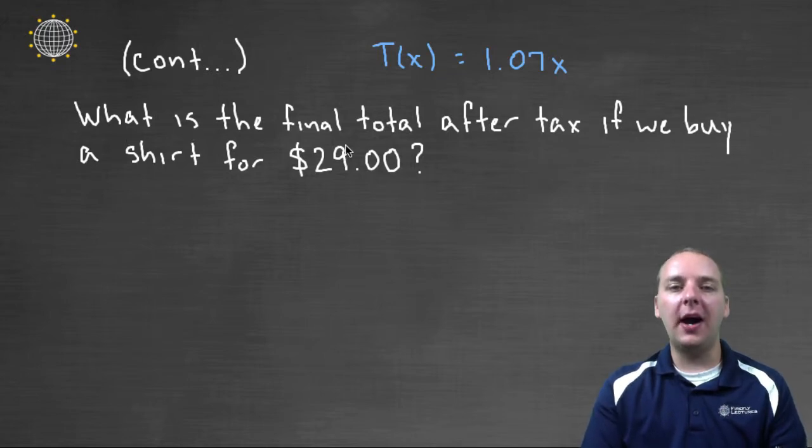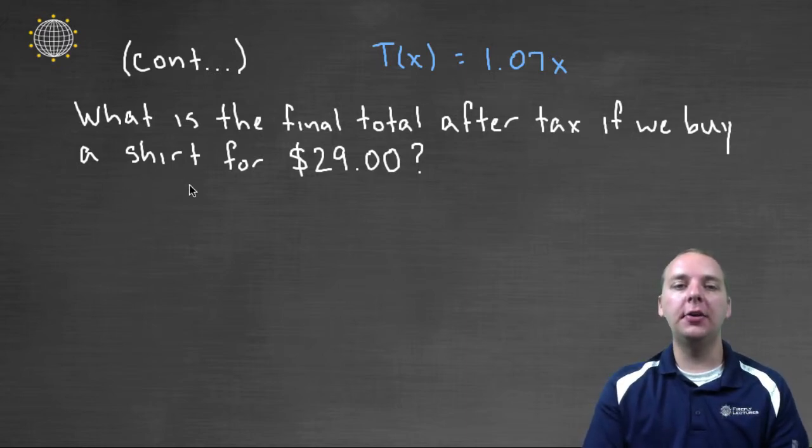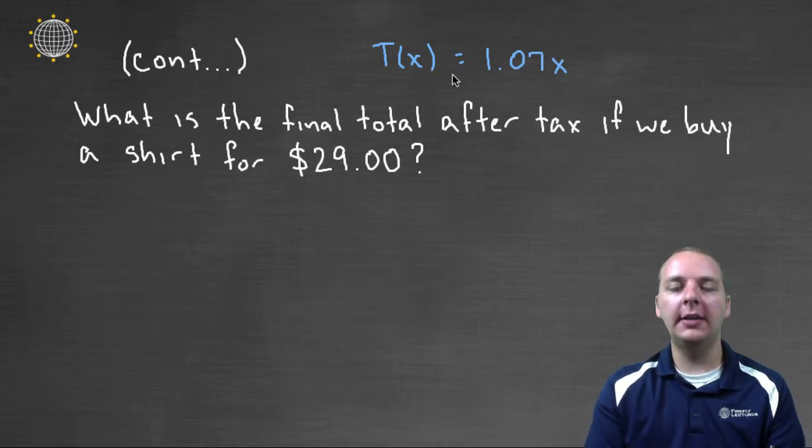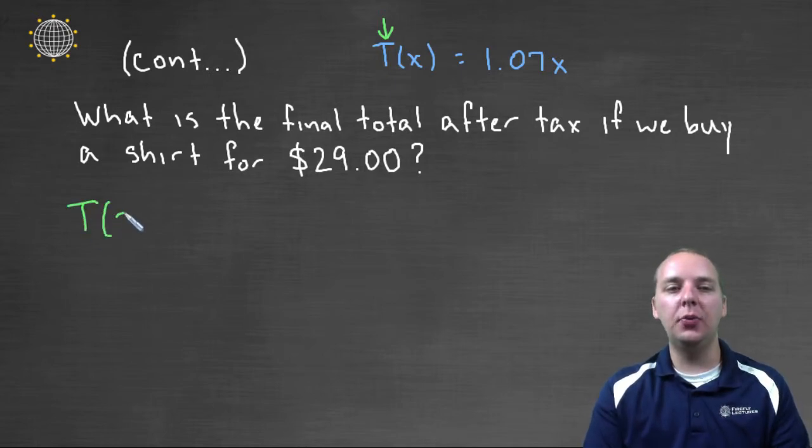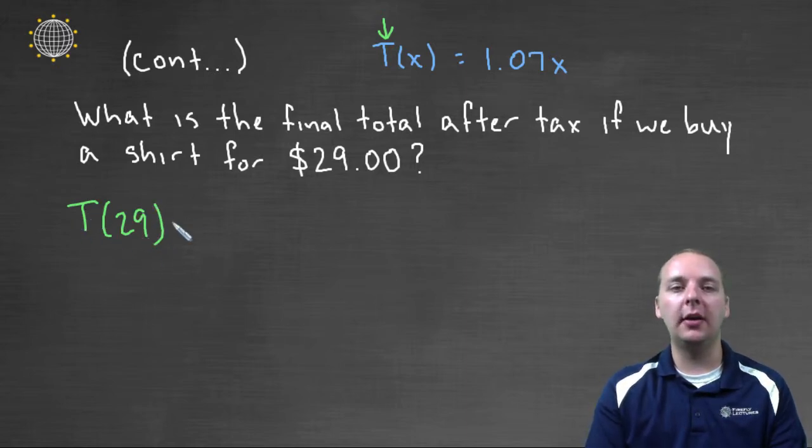Alright, and as a reminder, the T of X from the previous page was 1.07X. So if you want to find the total price of a shirt after tax, where the shirt cost twenty nine dollars, basically what you're asking for is T of twenty nine. So this is the total price of buying something for twenty nine dollars.